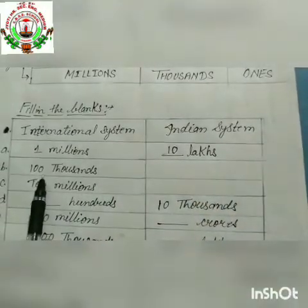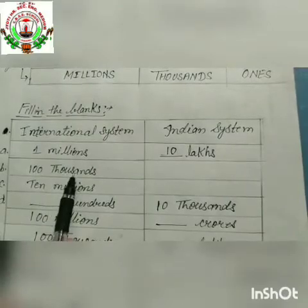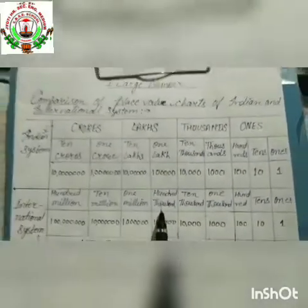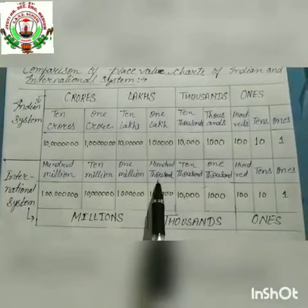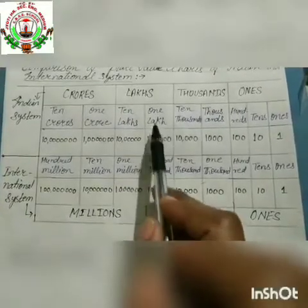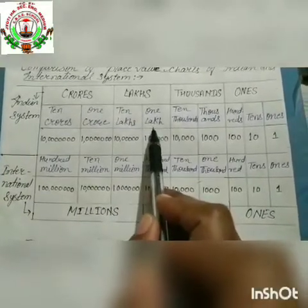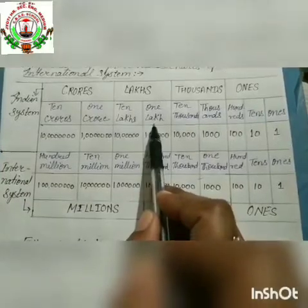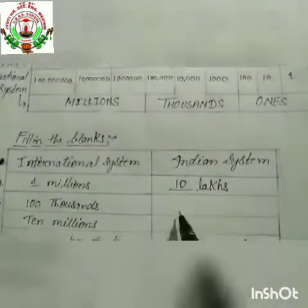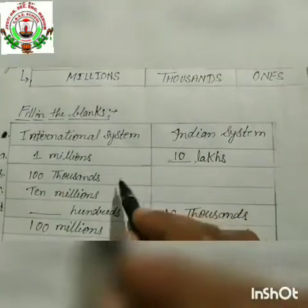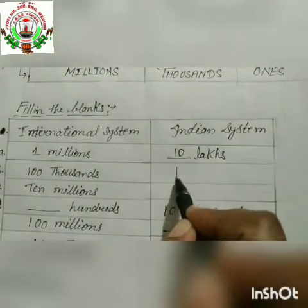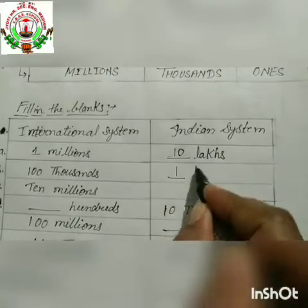Now the next blank is hundred thousand. In the international system it is hundred thousand. Hundred thousand is equal to one lakh in the Indian system. So we fill in: hundred thousand equals one lakh.